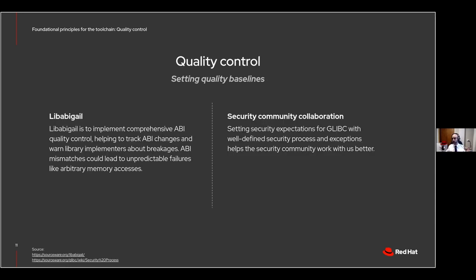We looked at the past and said we're shifting towards prevention. There are these foundational principles for the GNU toolchain: prevention is better than mitigation, we've got to have quality control, and at the end we need mitigation in the event prevention isn't enough. Quality control breaks down into three distinct things: ABI tracking, community process, and the QE aspect of verifying that your security mitigations, flags, and hardening you put in place were actually there.